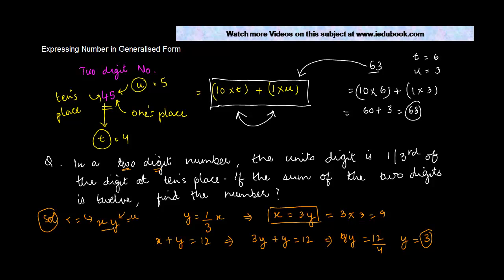The number, the value of the number we took as xy, so x is equal to 9, y is equal to 3. Now let us see whether this holds true for the question given to us. In a two-digit number, the unit's digit is one-third of the digits at tens place. So unit's digit is equal to 3, tens digit is equal to 9. Obviously, 3 is one-third of 9. If the sum of the two digits is 12, 9 plus 3 is what? 12. So that also holds true. Hence, we conclude that our answer is correct.